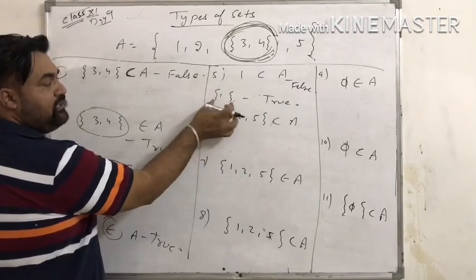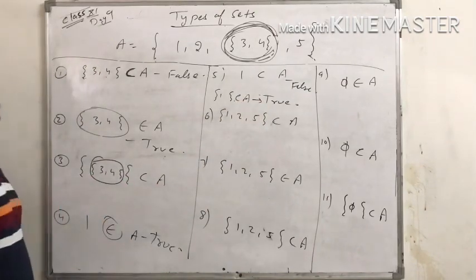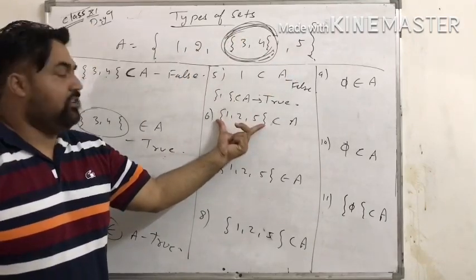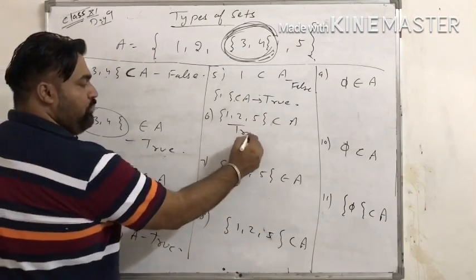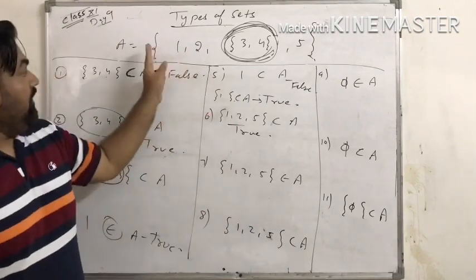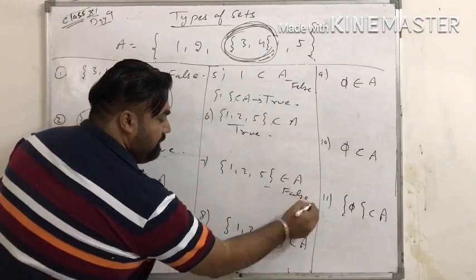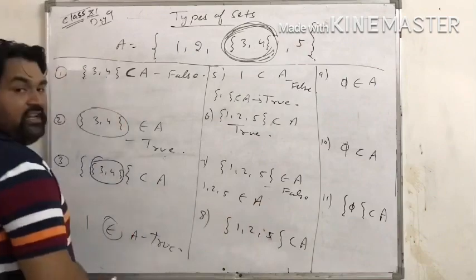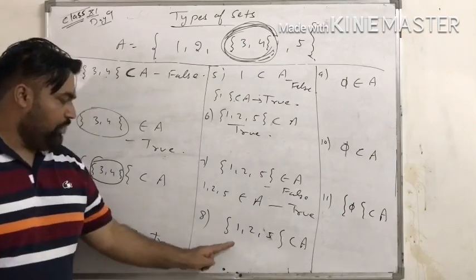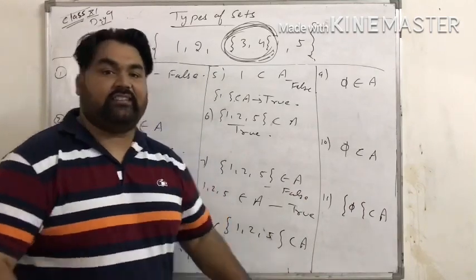For example, {1, 2, 5} with subset sign ⊆ A — this becomes a set which is a subset of A. But {1, 2, 5} ∈ A with belongs to — then check if {1,2,5} is literally an element inside A. With curly braces and subset sign, it is a subset, not 'belongs to'. But if the question is {1,2,5} ∈ A and that set is listed as an element in A, then it is true.